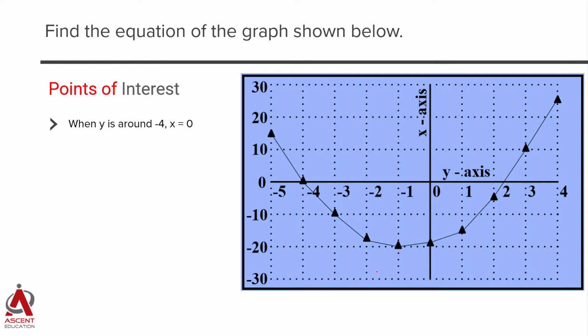The first one is when y is around minus 4, this is the point. Your x is equal to 0. Similarly look at the second one. When y is equal to 0, you have the value of x to be around minus 20. And the third point of interest for us is basically when y is between 2 and 3, this is 2, this is 3, the x value becomes 0. So these are the things which you basically need to keep in mind, points of interest to us.